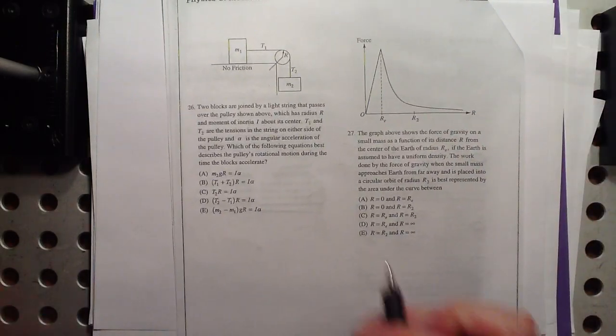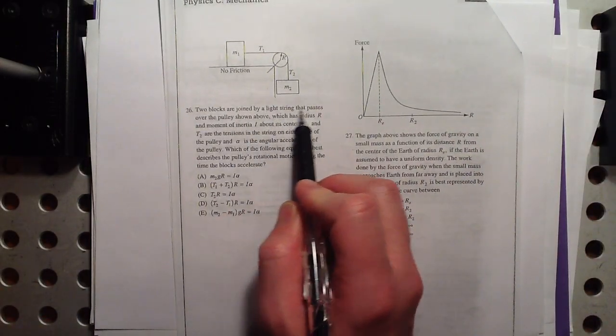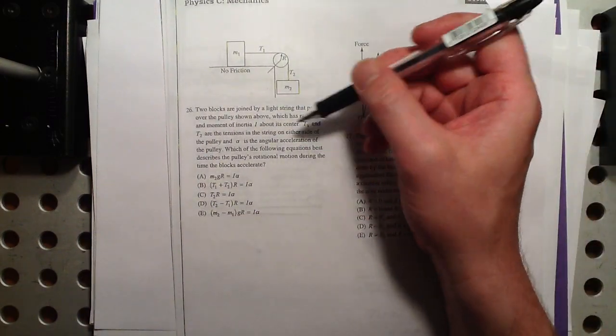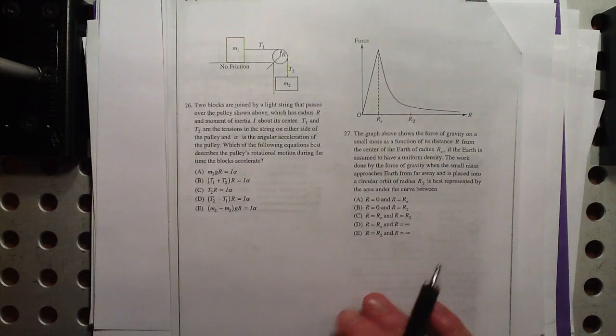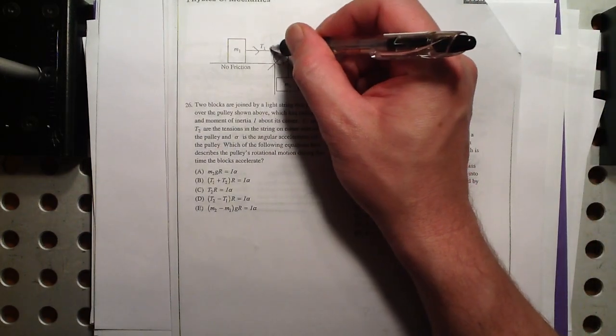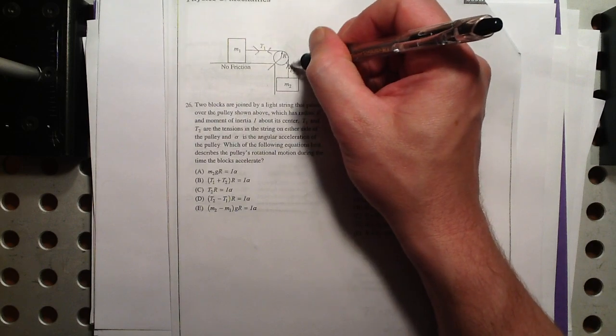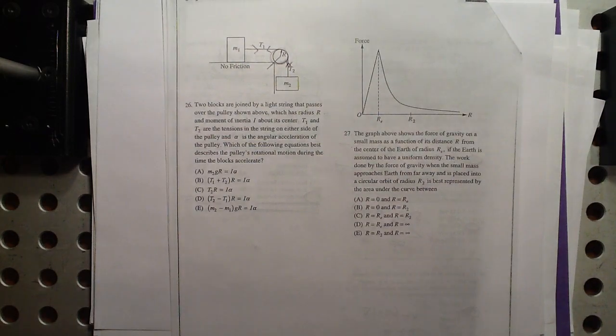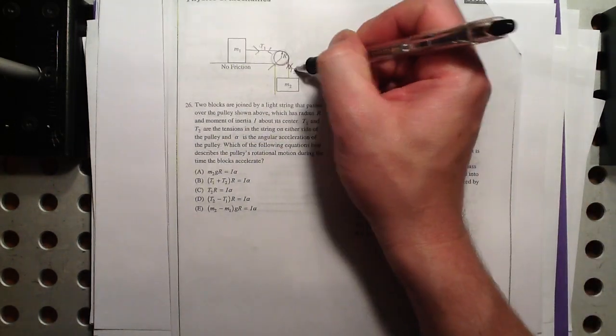All right, this looks like fun. Two blocks are joined by a light string that passes over the pulley shown above. And it's got radius of R, momentum of inertia I. And they're reminding us here that these tensions are not equal, T1 and T2, right? This has mass. So it's not negligible, and that means the tensions will be different.